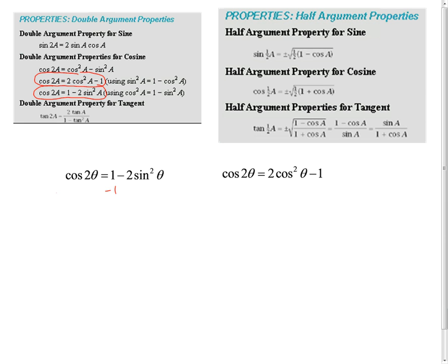So I can subtract one from both sides and get negative 1 plus cosine 2 theta equals negative 2 sine squared theta. And by the way, in the properties up there, they're using cosine 2a and I'm using cosine 2 theta. But remember, we're just looking at patterns here. The point of this double-argument property is that the argument on the left-hand side is 2 theta and the one on the right-hand side is half, is theta. So we just have to have that relationship hold true.